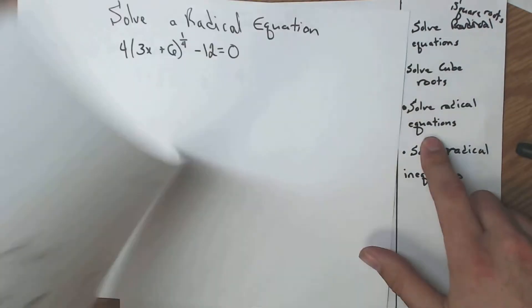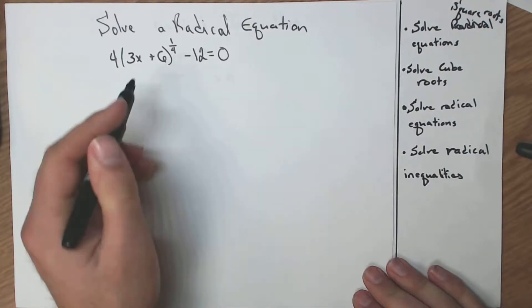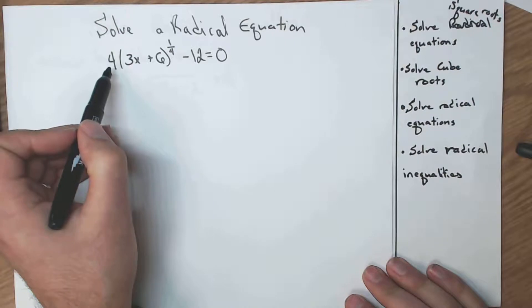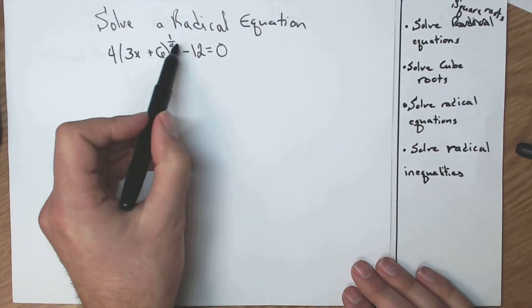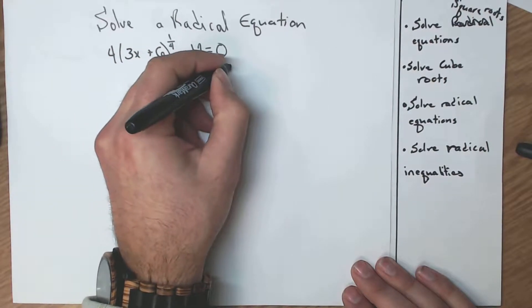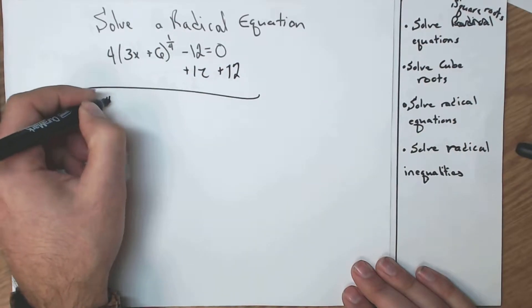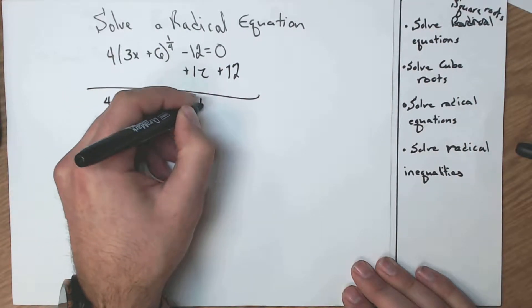Let's go on to the next one where we are solving radical equations. This is a slightly more complicated one. We have a fourth root, and we now have a number out in front. We still start off the same way. We want to isolate whatever it is here in parentheses that has the root applied to it. So I'm going to add 12. 4, 3x plus 6, quarter. There we are.